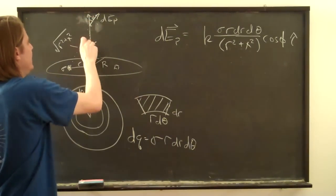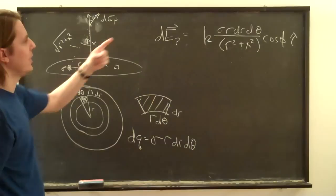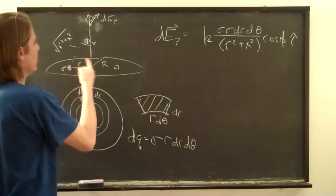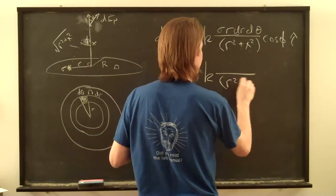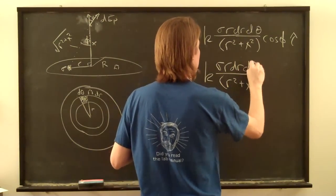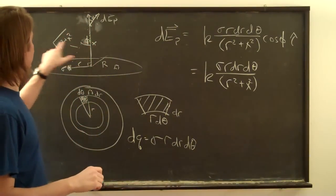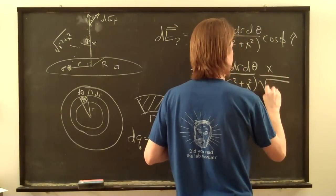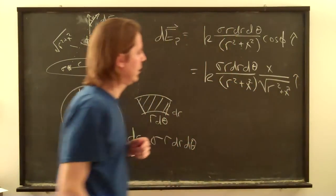So there's the angle phi. We can't get the value of it from those two vectors, but we can get it from here. And we know if that's phi, then that is also phi. And now we have a right triangle and we can say, okay, the cosine of phi must be the adjacent over the hypotenuse. So it must be X. So this just repeats. R squared plus X squared over sigma R dr d theta. And it must be then X over that square root. X over the square root of R squared plus X squared. X squared. I hat.